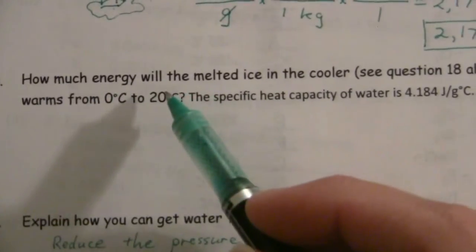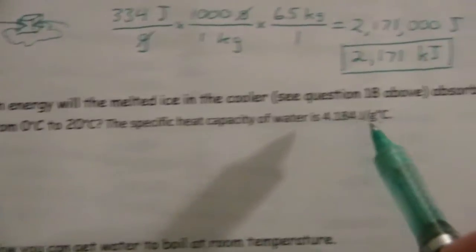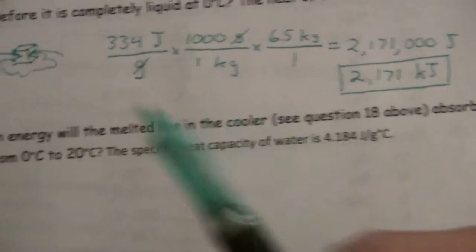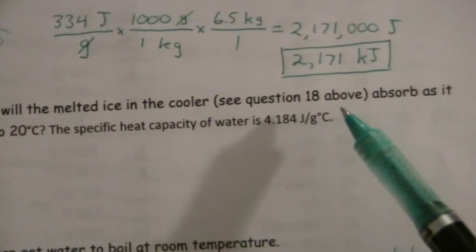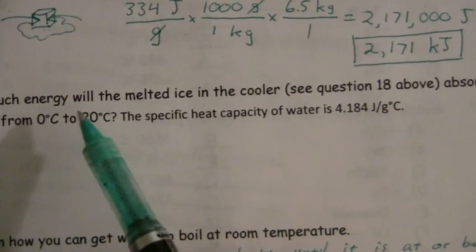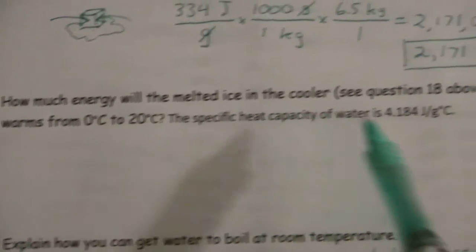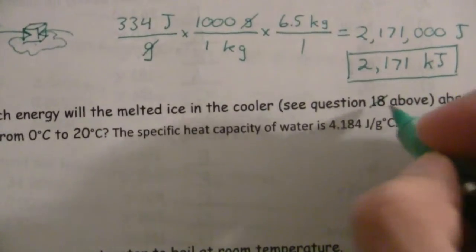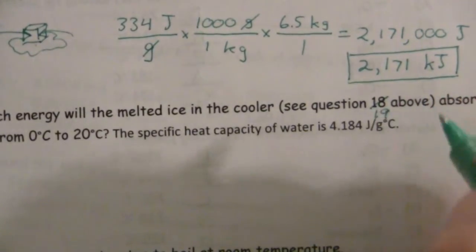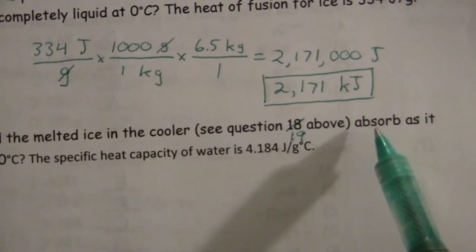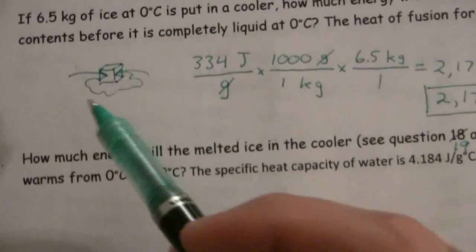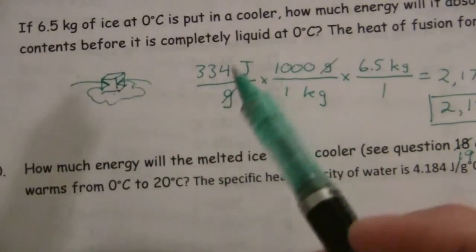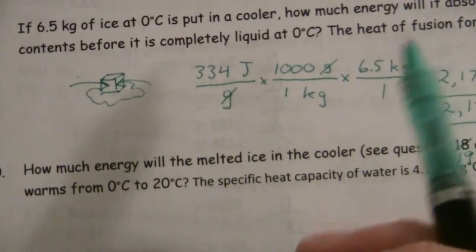How much energy will the melted ice in the cooler, the melted ice that has become water. How much will it absorb as it warms from 0 to 20 degrees. So after your ice melts, and it's all water, then it starts to increase in temperature.